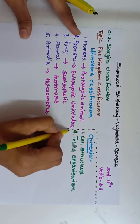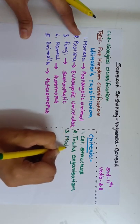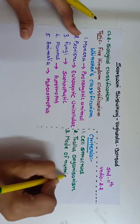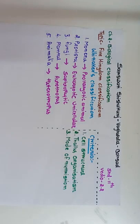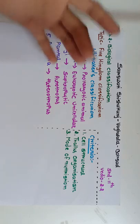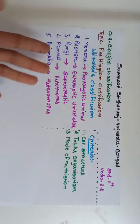The third criteria is mode of nutrition. Three types of nutrition are present: autotrophic, saprophytic, and heterotrophic. The five kingdom classification organisms are classified based on which type of nutrition takes place.